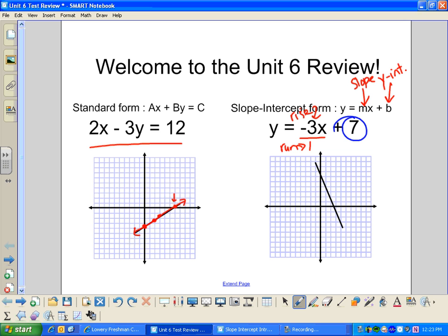So my Y axis, I'm going to find 7. And my slope is negative 3, which means I'm going to go down 3 and over 1 to get to my next point. Down 3 over 1. Down 3 over 1.